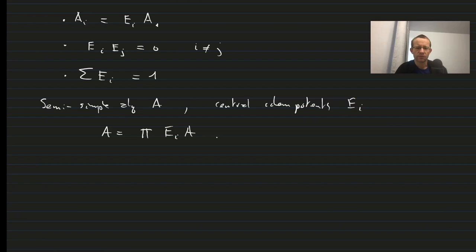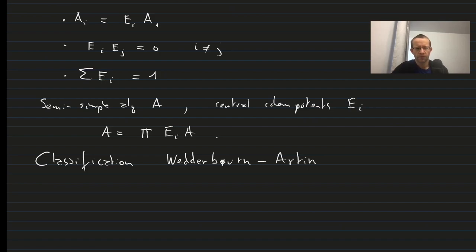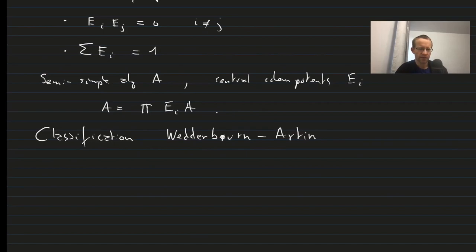Now, there is a classification theorem of these semi-simple algebras, which is called the Wedderburn-Artin Theorem, which goes as follows. Suppose we have a semi-simple ring or algebra.